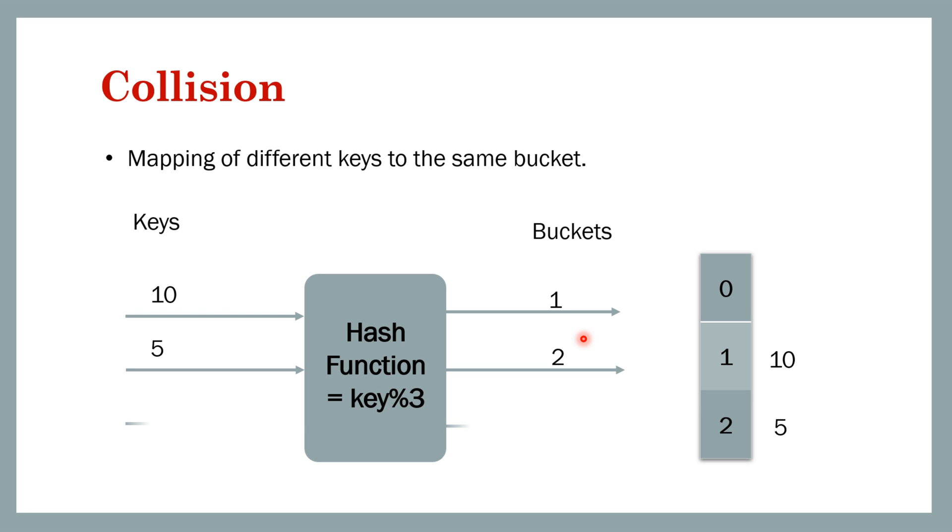Let's say we map 10. 10 modulo 3 is 1, so it goes to bucket 1. 5 modulo 3 is 2, so it goes to bucket ID 2. Now here you see there is a collision, that means two keys are mapped to the same bucket, that is bucket ID 2. So this phenomenon is called collision and we need to handle this case.